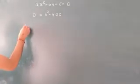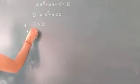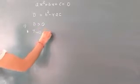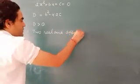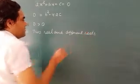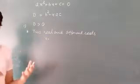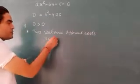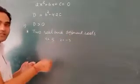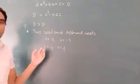First case: if D is greater than zero, the equation will have two real and different roots. It means x will have two values that are real but different from each other — for example, x = 5 and x = -3, or x = 1/2 and x = 1/4. These are two real and different roots.